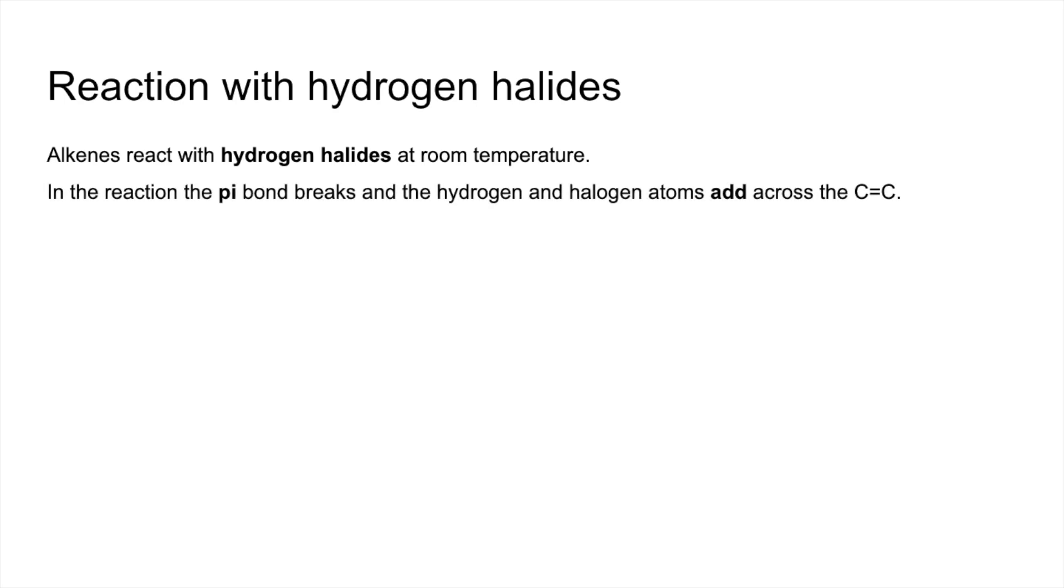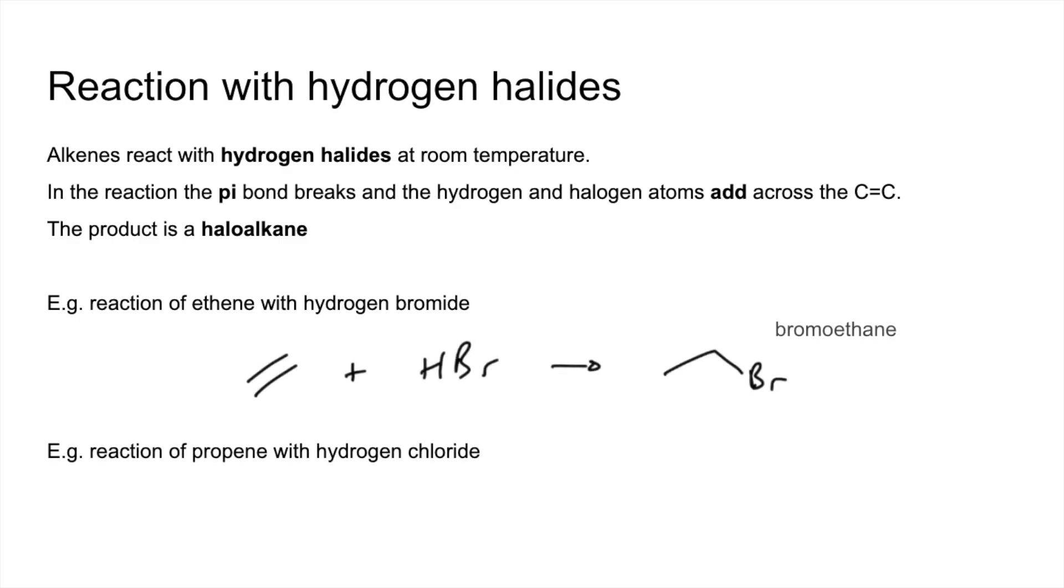And yet again, the pi bond breaks, and the hydrogen and halogen atoms add across the carbon-carbon double bond. And we're going to make a haloalkane. So there's your two examples. So the first one would make bromoethane.